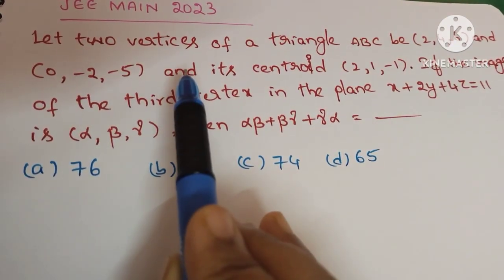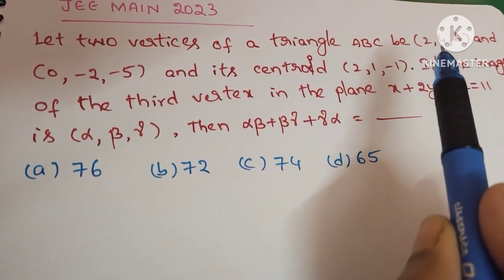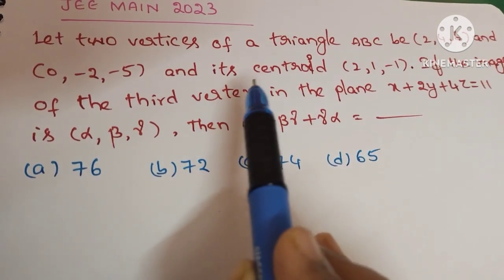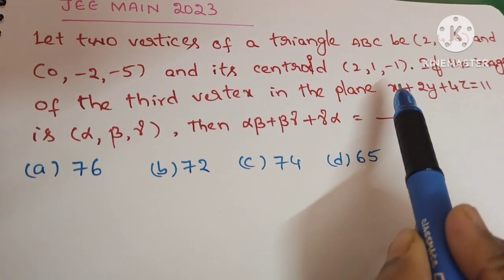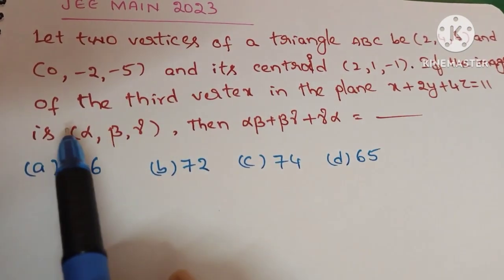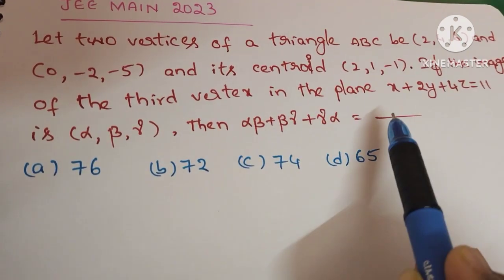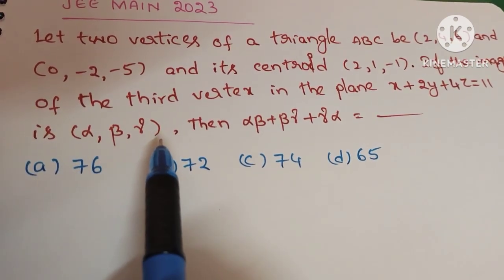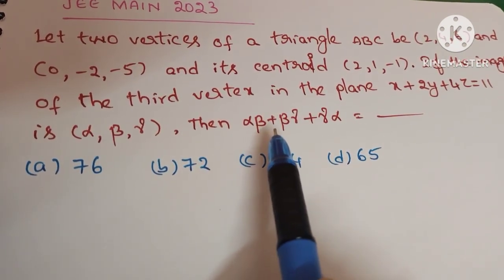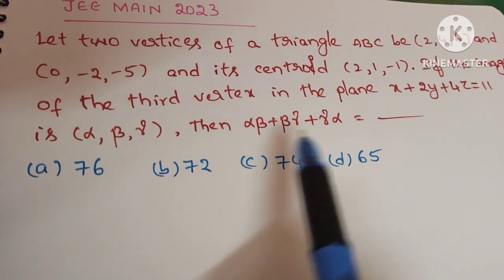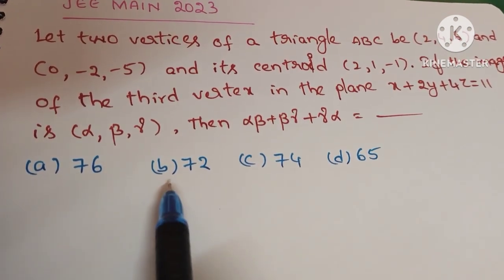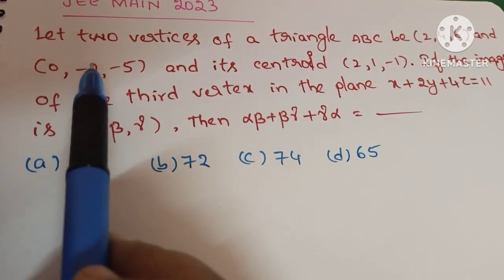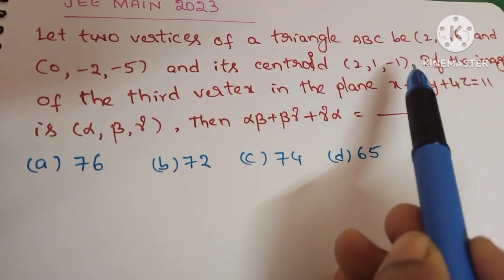Let two vertices of a triangle ABC be (2, 4, 6) and (0, -2, -5), and its centroid be (2, 1, -1). If the image of the third vertex in the plane x + 2y + 4z = 1 is (alpha, beta, gamma), then find alpha·beta + beta·gamma + gamma·alpha. The given options are: (a) 76, (b) 72, (c) 74, (d) 65.